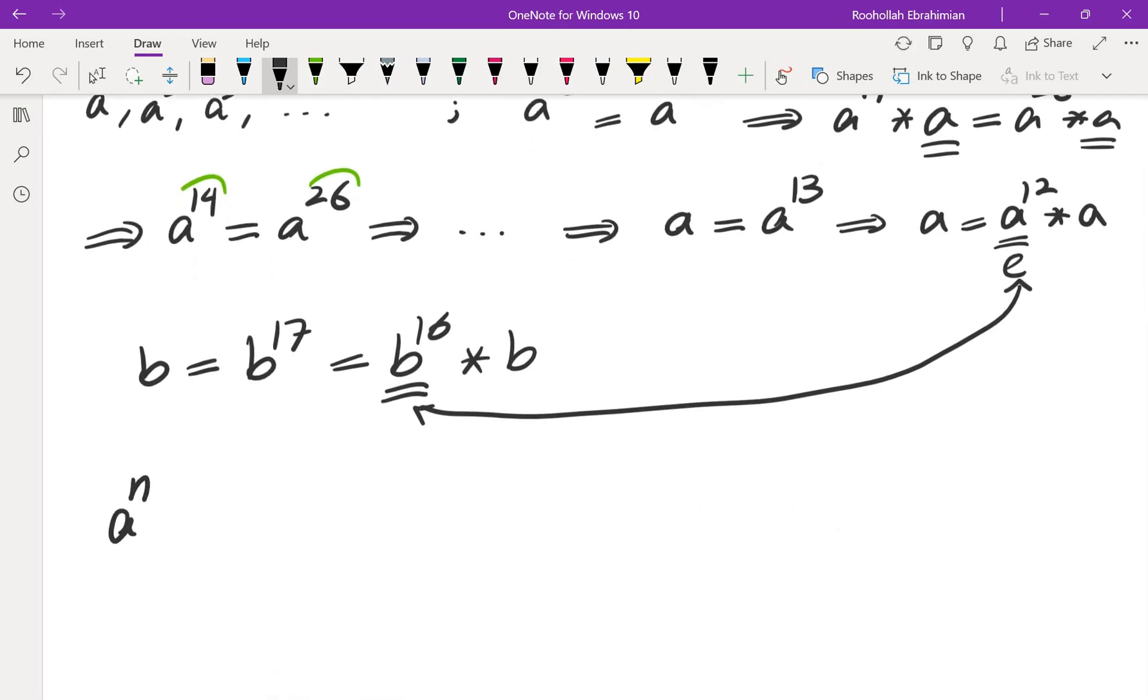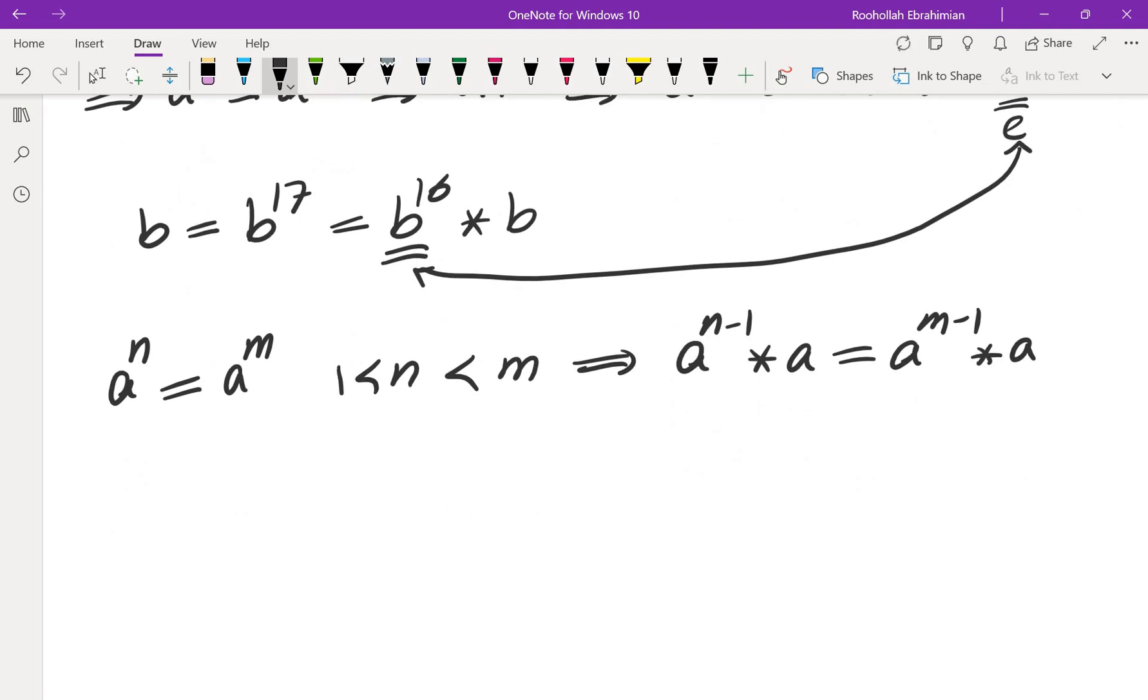So in general, you're going to be able to find n and m such that a to the power of n is equal to a to the power of m, and n is less than m. Now, if you reduce n by 1, you get a to the power of n minus 1 star a is equal to a to the power of m minus 1 star a. If n is more than 1, you can do that. And that would tell you that a to the power of n minus 1 is equal to a to the power of m minus 1. And if you repeat this, you're eventually going to get a to the power of 1 is equal to a to the power of k plus 1, where k is a positive integer.